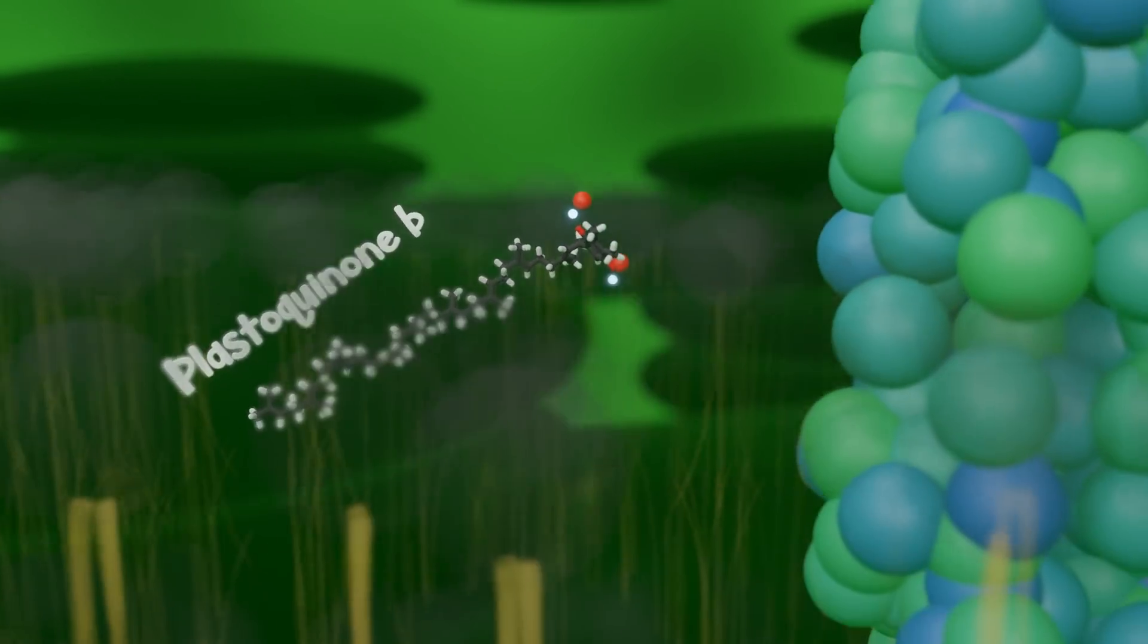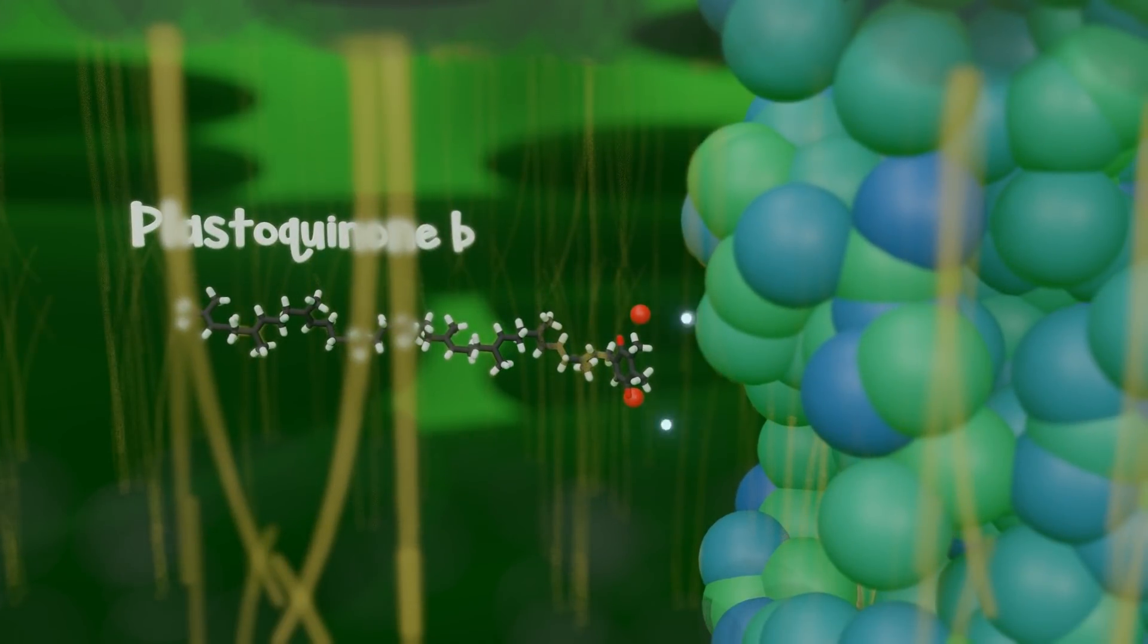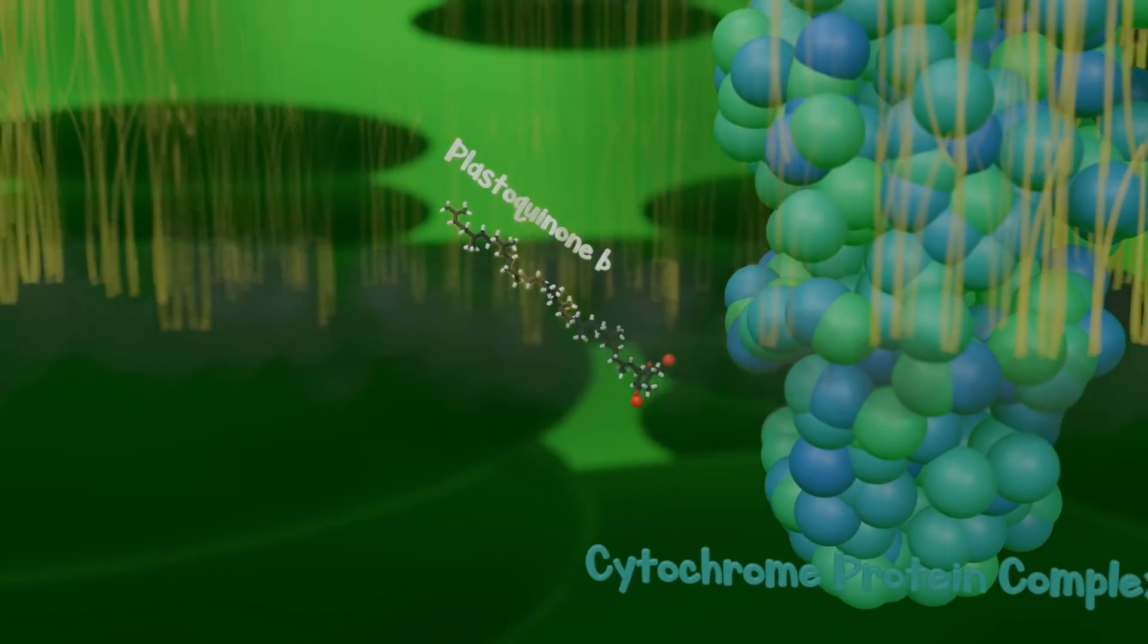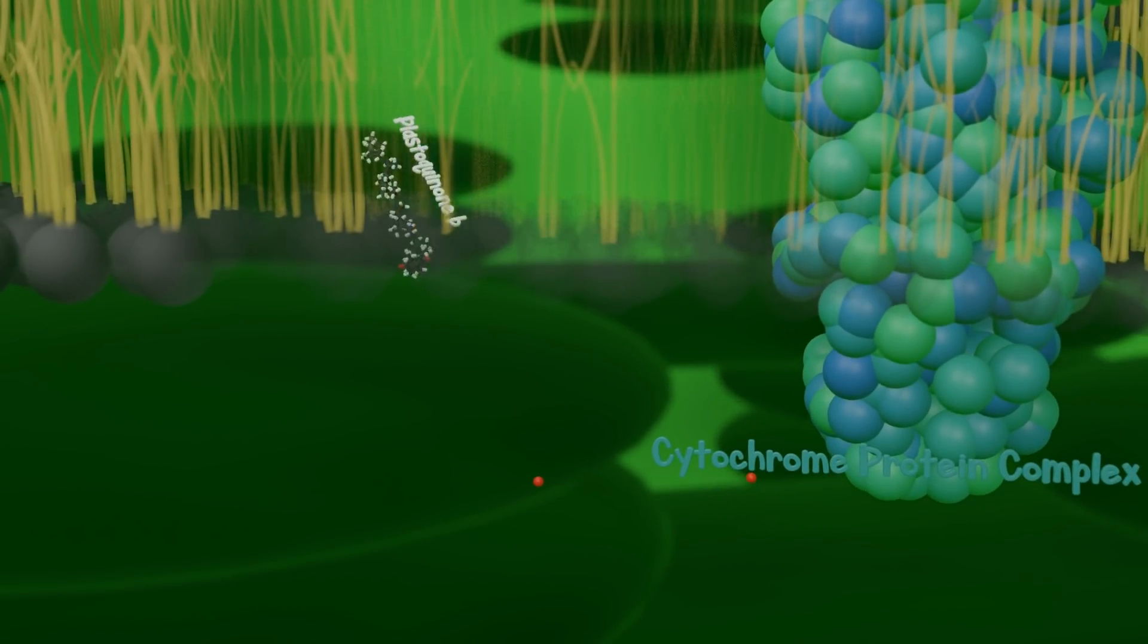Finally, plastiquinone B passes the two electrons to a cytochrome protein complex and dumps the resulting protons into the lumen, or interior, of the thylakoid.